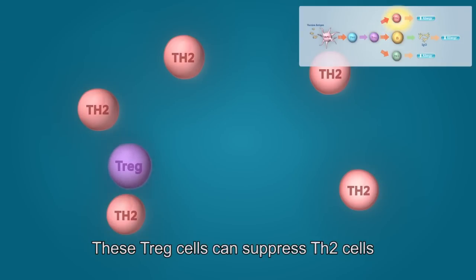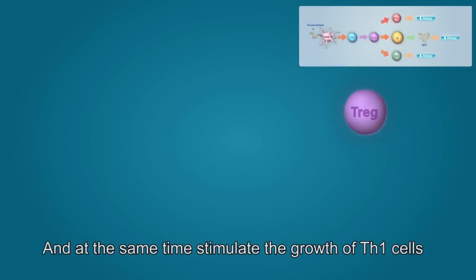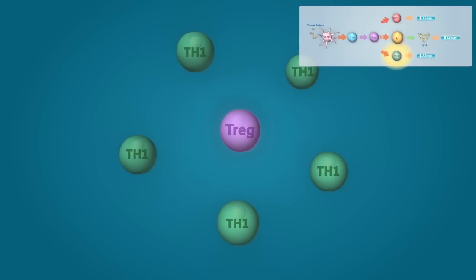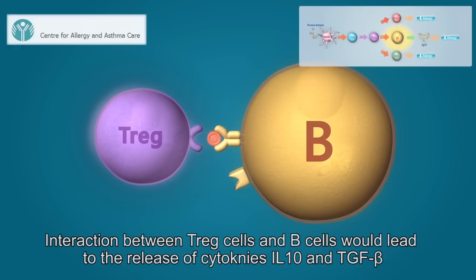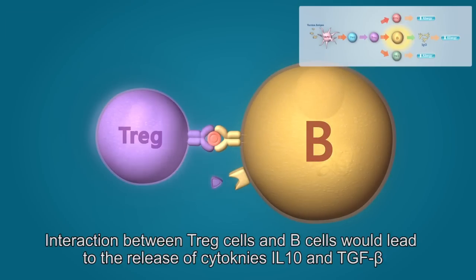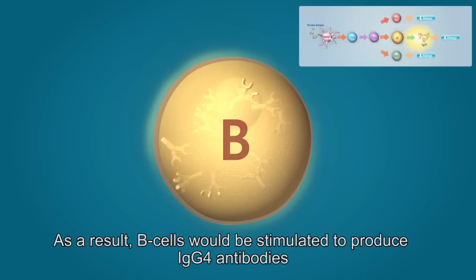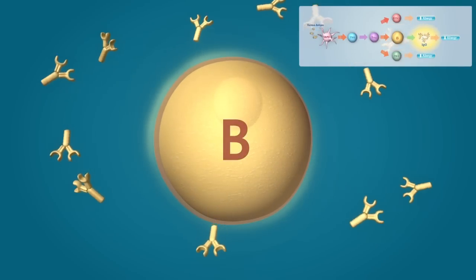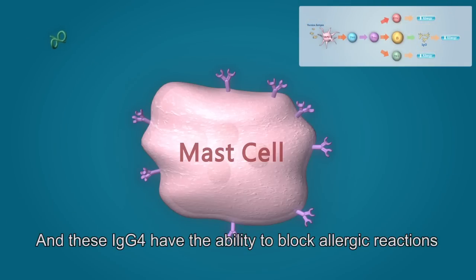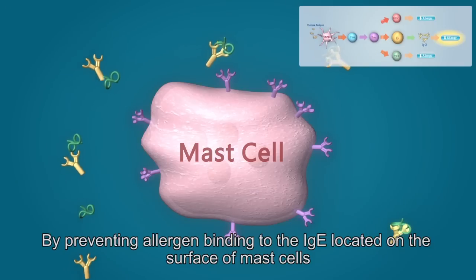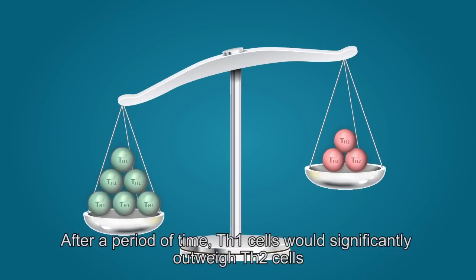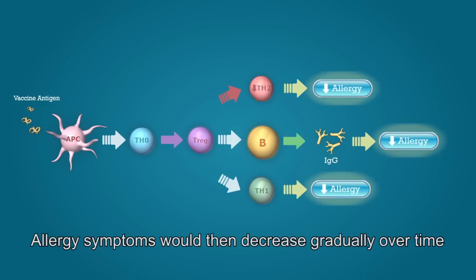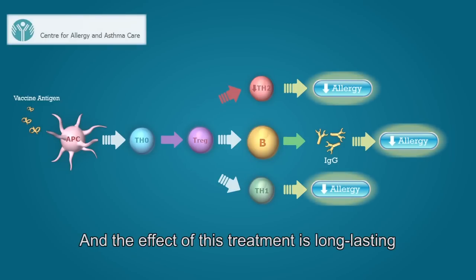These Treg cells can suppress Th2 cells, and at the same time stimulate the growth of Th1 cells. Interaction between Treg cells and B cells will lead to the release of cytokines interleukin-10 and transforming growth factor beta. As a result, B cells will be stimulated to produce IgG4 antibodies, and these IgG4 antibodies have the ability to block allergic reactions by preventing allergen binding to the IgE located on the surface of mast cells. After a period of time, Th1 cells would significantly outweigh Th2 cells, allergic symptoms would decrease gradually over time, and the effect of this treatment is long-lasting.